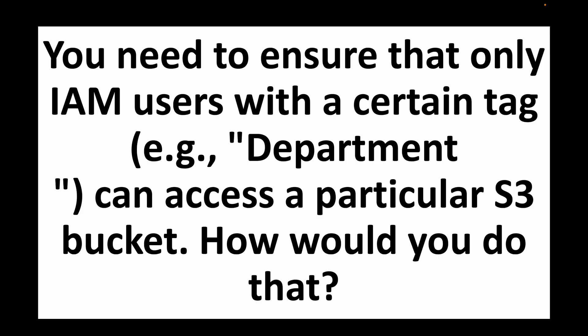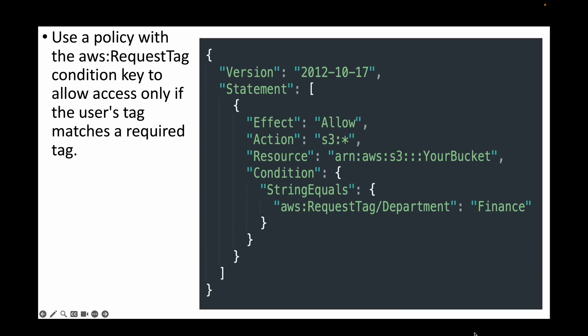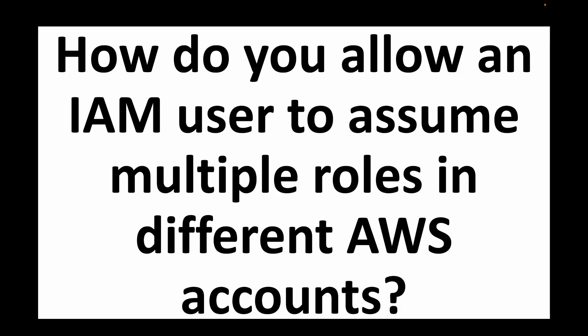The next question is: you need to ensure that only IAM users with a certain tag — for example, 'department' — can access a particular S3 bucket. For this, we define an IAM policy and in the conditions we define the request tag. Only if the request tag is 'department' with the value 'finance' will actions on the S3 bucket be allowed. You can also define which specific S3 bucket to allow. If users have any other tags, the action is not allowed.